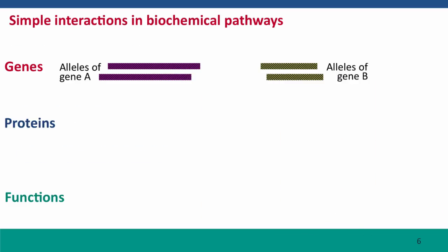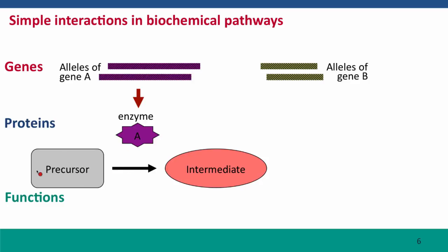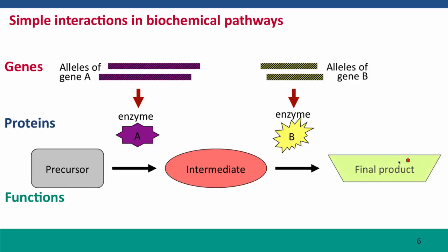Now we're going to think about this first in biochemical pathways, starting with very simple ones where two genes are responsible for two biochemical steps. The first step takes a precursor — a small chemical molecule, a metabolite — and gene A produces enzyme A, which converts this precursor into an intermediate molecule. The intermediate then serves as the substrate for a second reaction catalyzed by enzyme B, the product of gene B, producing the final product.